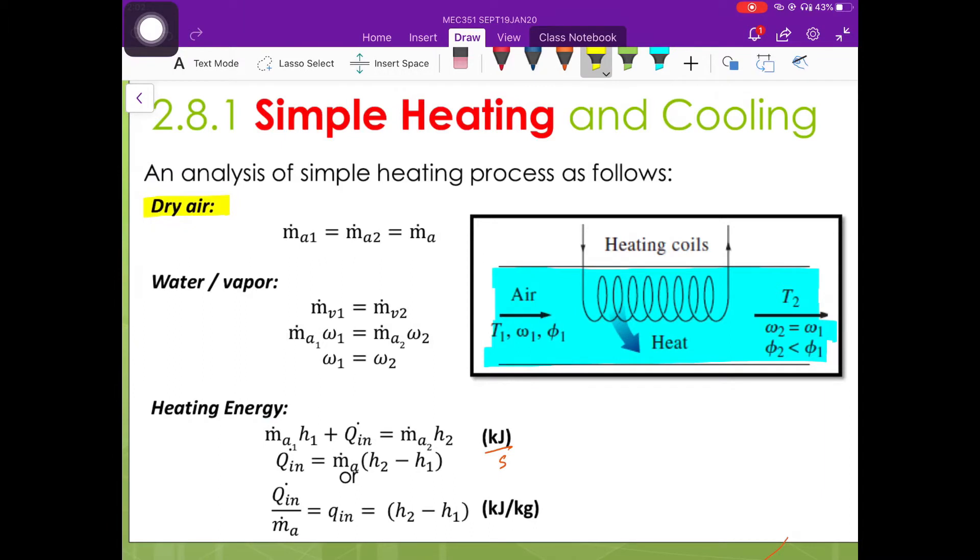For the mass balance of the dry air, we know that the summation of the mass flow rate of the dry air at the inlet is equal to the summation of the mass flow rate of the dry air at the outlet. Since we only have one inlet and one outlet, therefore, the mass flow rate at the inlet will be equal to the mass flow rate at the outlet. To ease our analysis, we are going to assign the mass flow rate as ṁₐ.